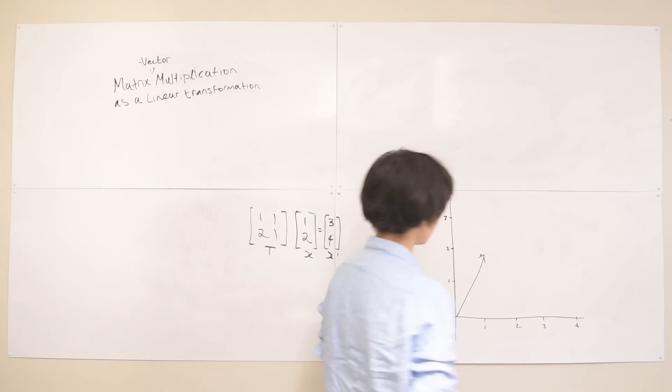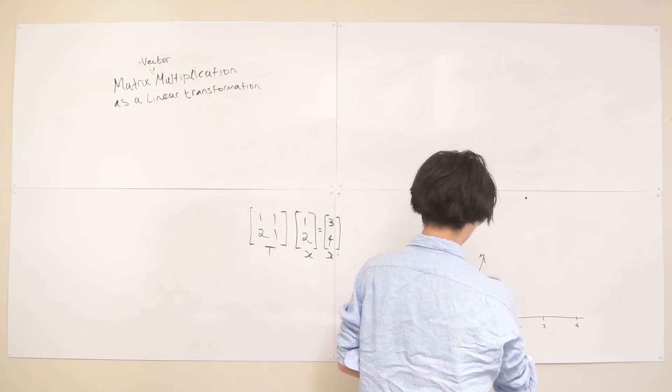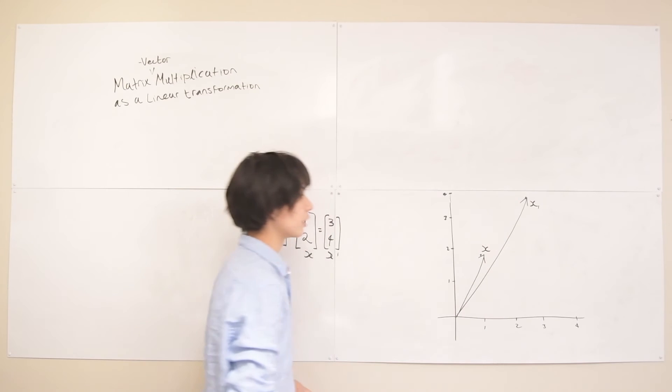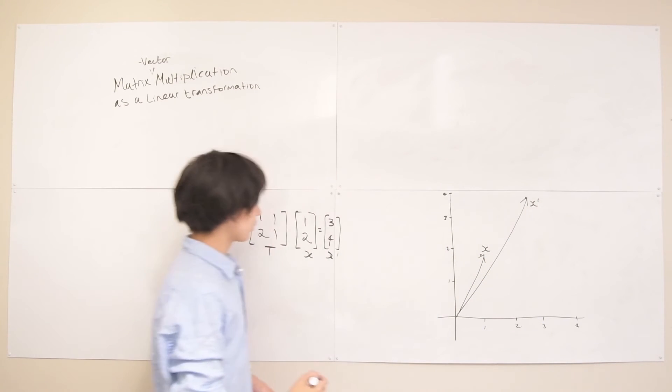So let's draw X prime on this: 3, 4. So let's call this X, and this is X prime.